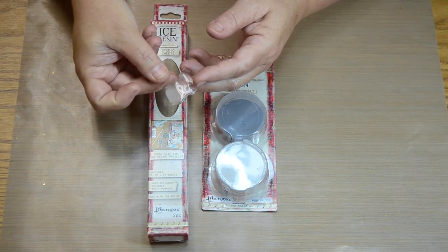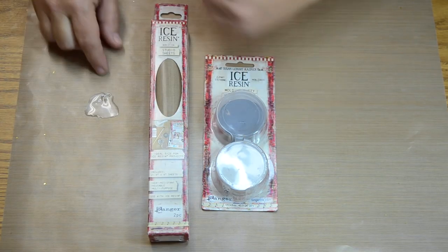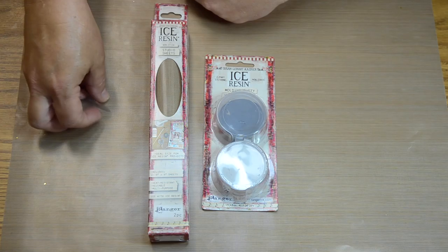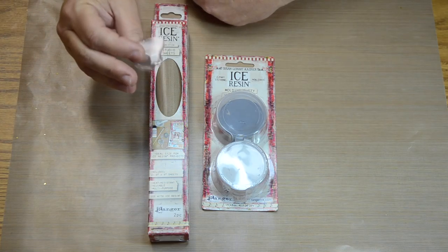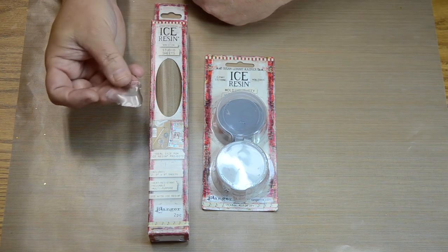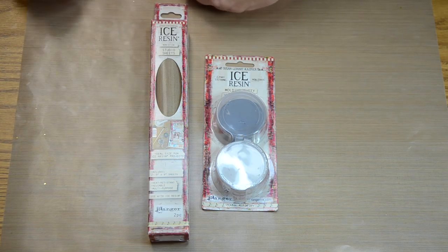You really have to have this when working with Ice Resin. This is a drip of resin and it's been dried and it dropped right on the studio sheet and when it was done I peeled this right off and it was no big deal. So anything else you have you're not going to be able to have the resin peel right off of this. So there's no mistakes with these studio sheets. You got to have them.